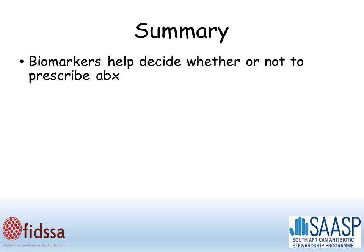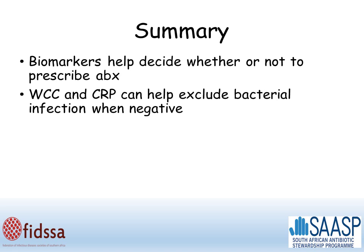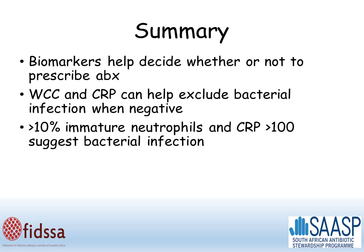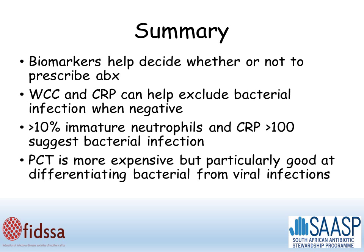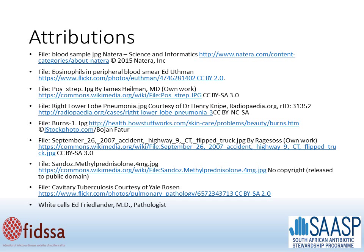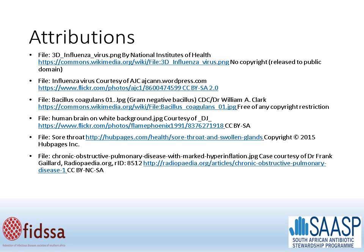In summary, biomarkers help you decide whether or not to prescribe antibiotics. White cell count and CRP can help exclude bacterial infection when negative. Greater than 10% immature neutrophils and a CRP greater than 100 suggest bacterial infection without being definitive. Procalcitonin is more expensive, but it's particularly good at differentiating bacterial from viral infections.